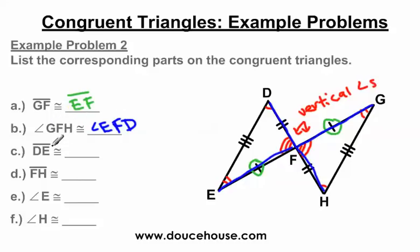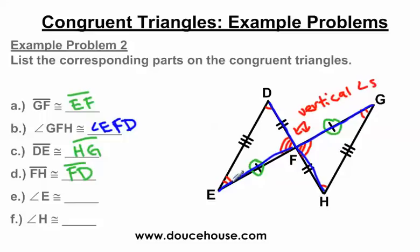We have line segment DE: D corresponds with H, and E corresponds with G, so segment DE is congruent to segment HG. Then FH to FD: from F to H is three arcs to one arc, and three arcs to one arc on the other side — so FH is congruent to FD. Angle E has two arcs and G has two arcs, so angle E is congruent to angle G. And finally, angle H has one arc and D has one arc, so angle D is congruent to angle H.